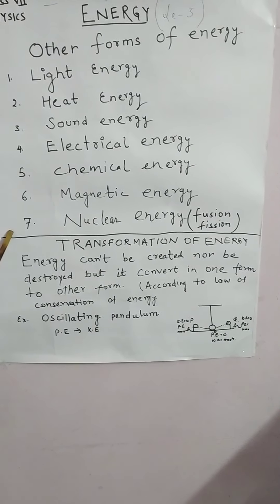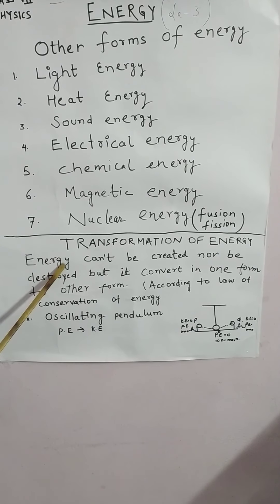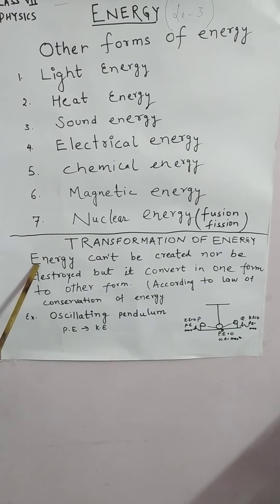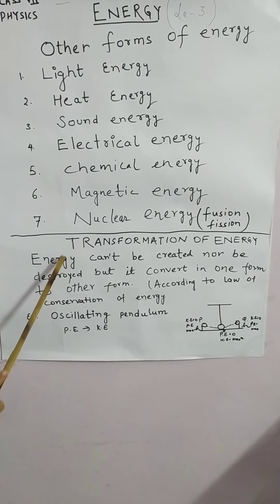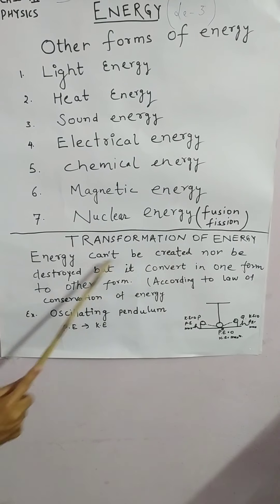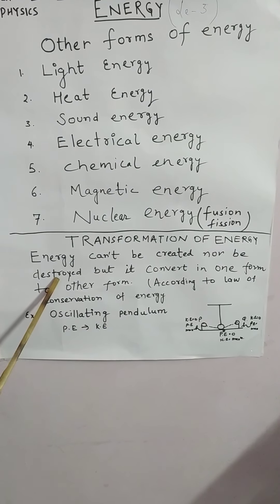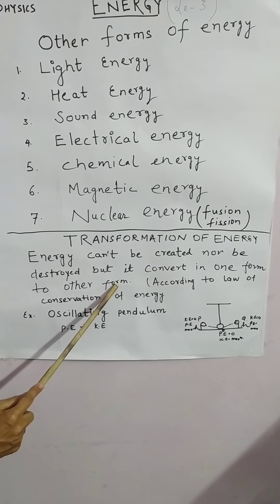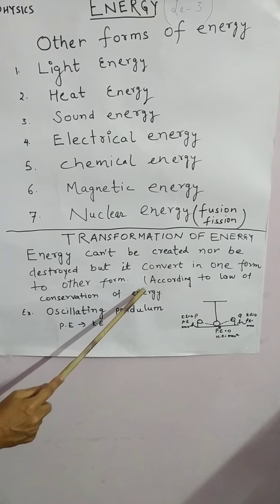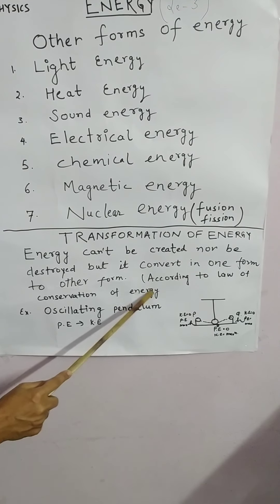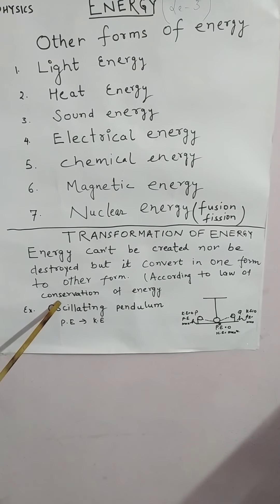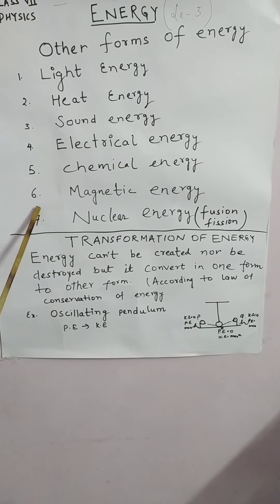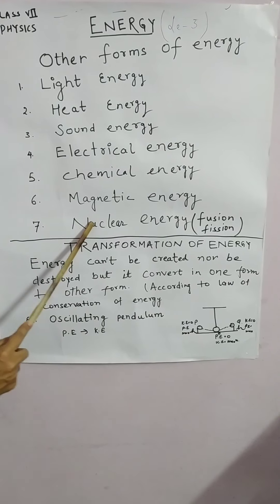In all these processes, we use transformation of energy. What is transformation of energy? Energy cannot be created nor be destroyed, but it converts from one form to another form. This is called the law of conservation of energy. According to this law, all these forms of energy are transformed from one form to another form.